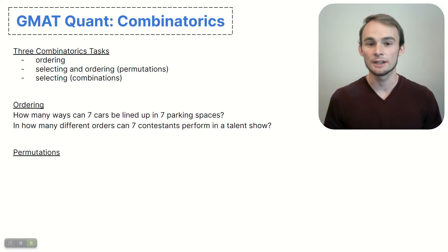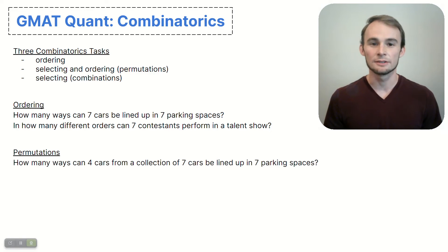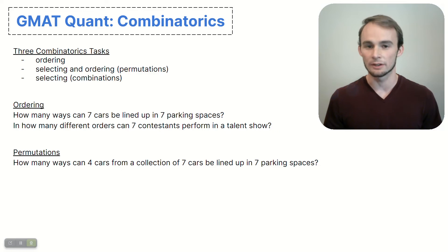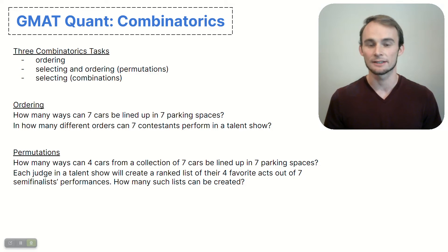A permutations question involving both selecting and ordering might ask you how many ways four of those cars from the collection of seven could be lined up, or how many different ranked lists of four contestants could be created from among the seven contestants in the talent show.